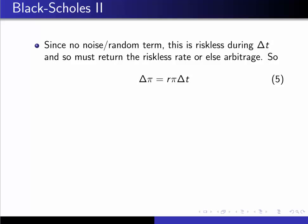So Delta Pi, Delta of our portfolio, has to equal R Pi Delta T. That would be what our returns would be for a riskless investment.